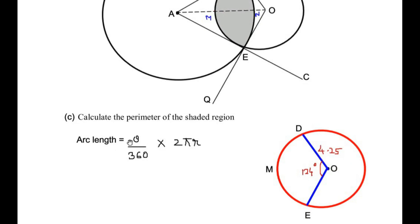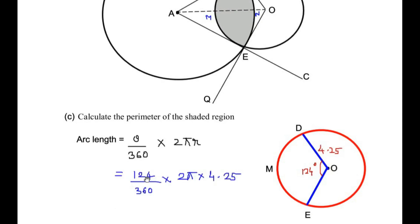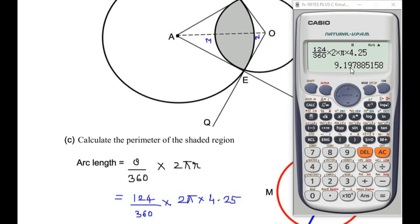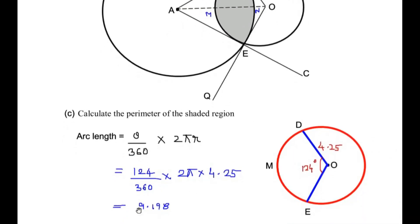Using the arc length formula — theta over 360 times 2πr — where theta is the central angle and r is the radius, we substitute: (124/360) × 2π × 4.25. This gives 9.1978, which we round to 9.198 centimeters. So the arc length DME for the circle with center O is 9.198 cm.